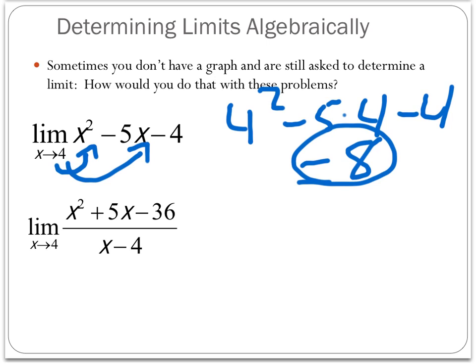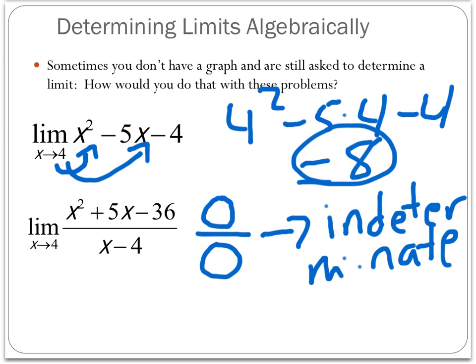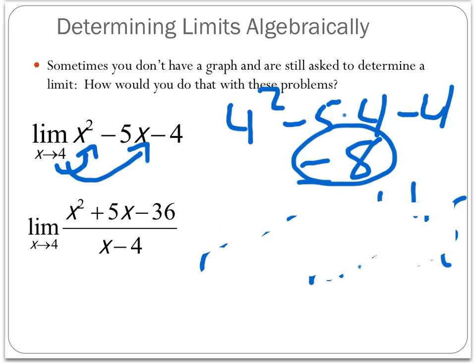Let's look at the next problem. Remember, substitute first. When I replace x with 4 in both the top and the bottom, I get 0 on top and 0 on the bottom. We know in math we can't divide by 0, but this is a unique situation — we get 0 divided by 0, which is called indeterminate. Indeterminate means there is an answer; we just can't determine it by substituting. We have to do something else to the equation.